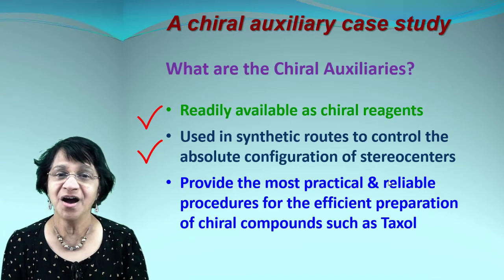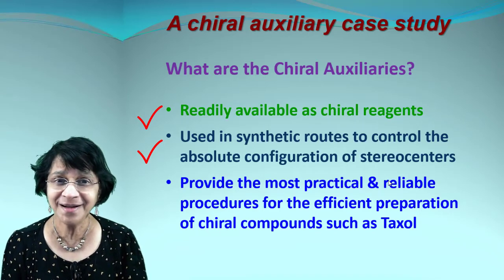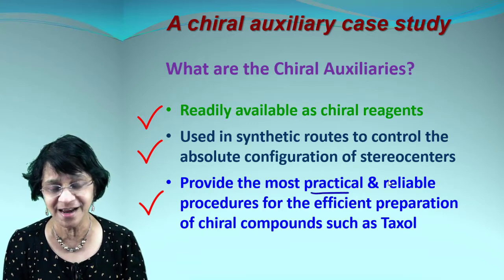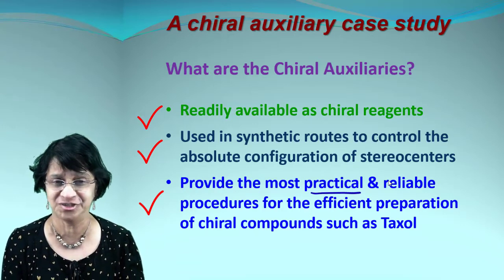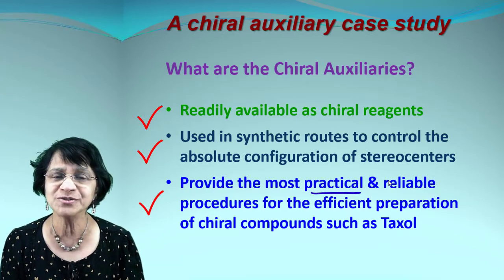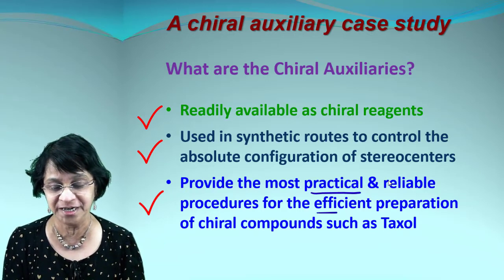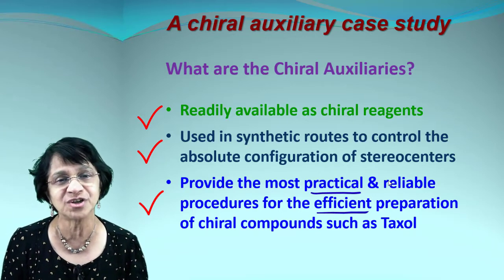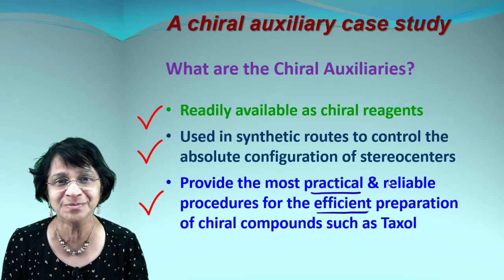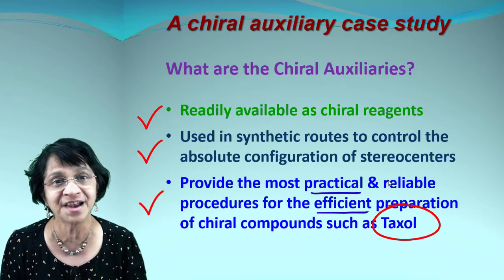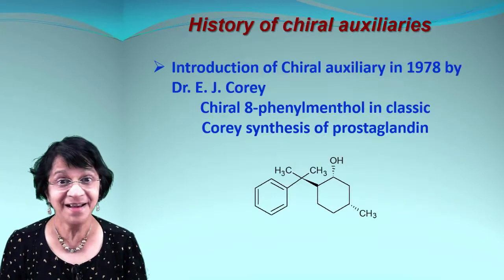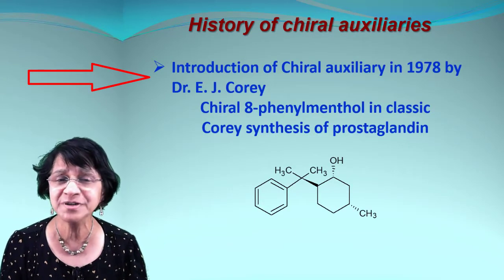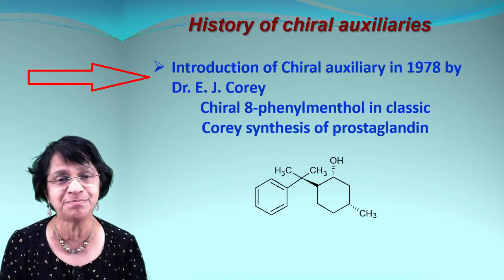Chiral auxiliaries provide the most practical and extremely reliable procedures, and these processes are very efficient. They can be used for making any compounds which have stereocenters — not just one but multiple stereocenters, like taxol.